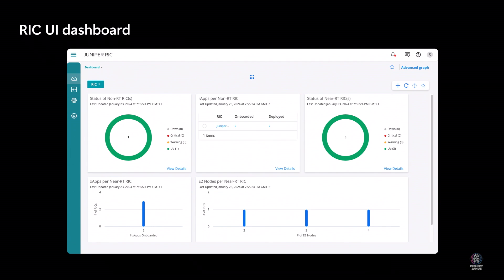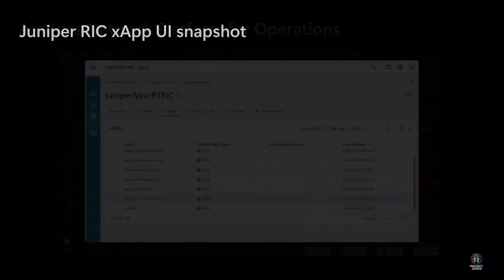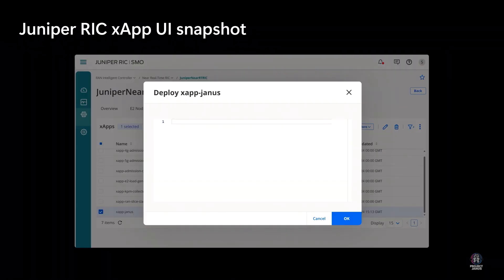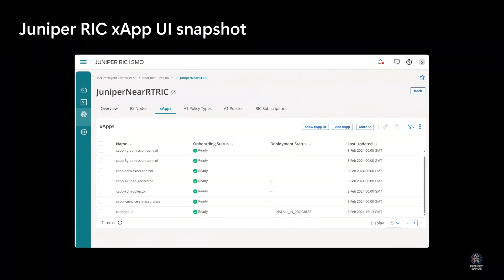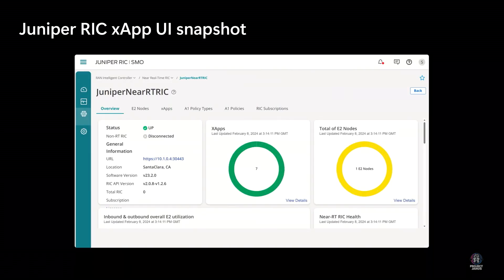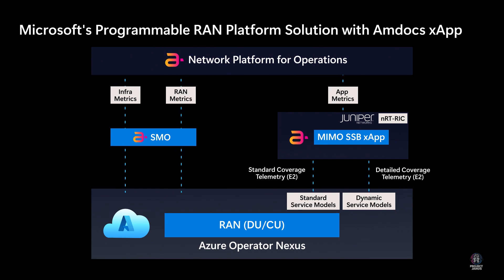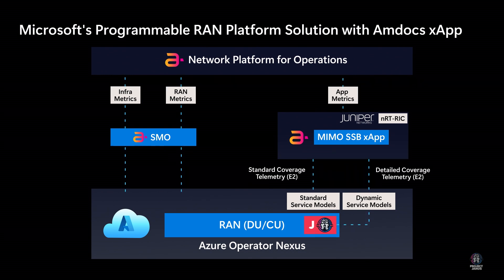Together, we demonstrate how the additional telemetry can enhance network coverage with smart beamforming. In our demo, Amdocs' massive MIMO X-App can additionally subscribe to fine-grained coverage telemetry using Juniper RIC's Open API. Juniper RIC establishes the necessary E2 procedures to install and utilize this dynamic service model for telemetry collection and forwards data to the X-App. Based on the X-App requirements, Microsoft implemented several BPF codelets that collect detailed physical level information about uplink quality in L1, L2 access statistics, and so on.